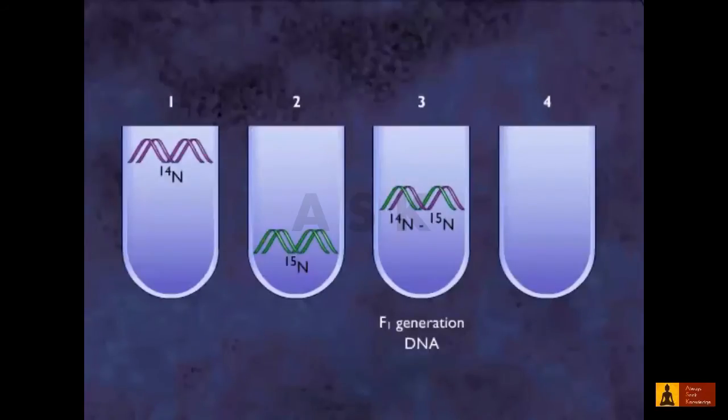After two generations in N14 medium, two bands were obtained. One of intermediate density, in which one of the strands contained N15, and one of low density, in which neither strand contained N15.